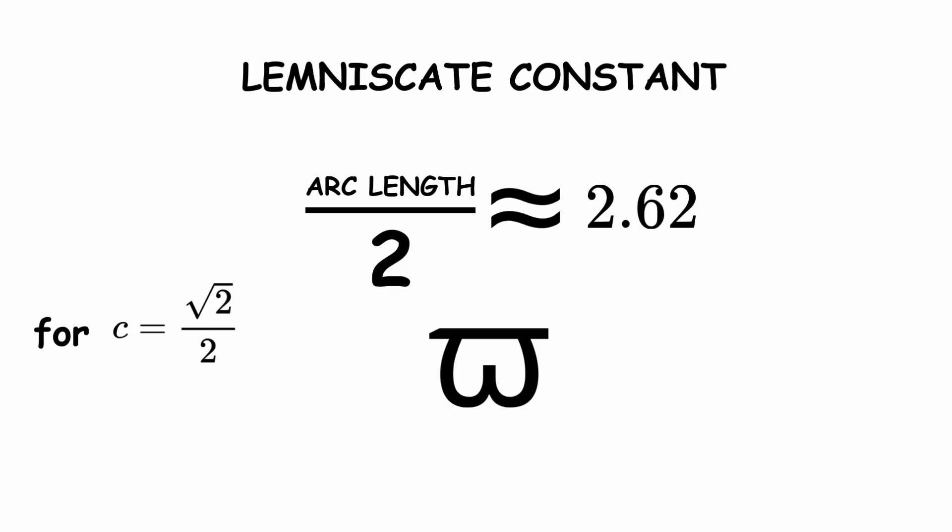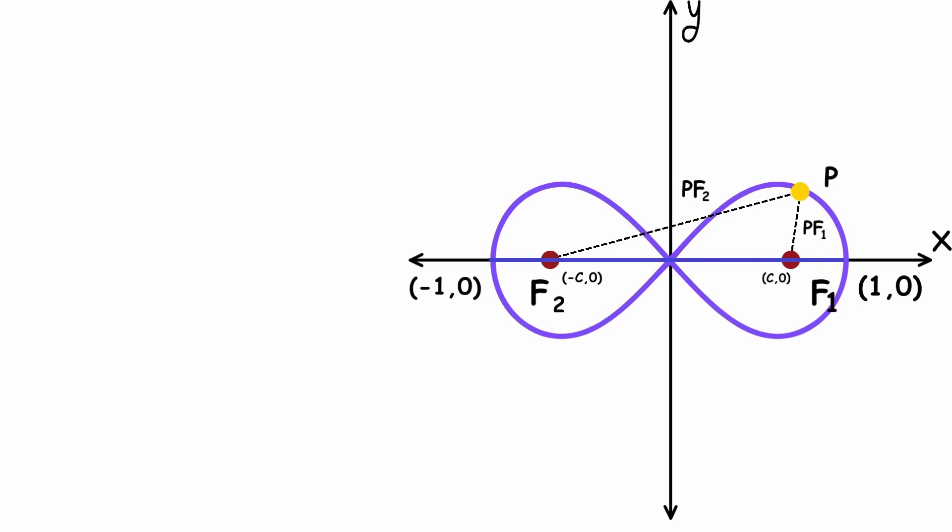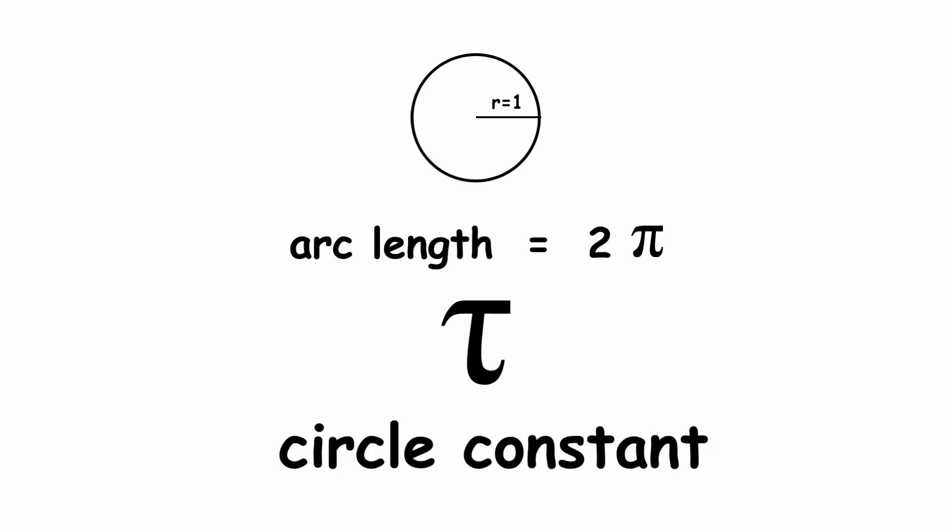However, it is worth noting that some mathematicians say that 2 pi, the arc length of the entire Lemniscate, is the Lemniscate constant instead. For those of you who know that the arc length of the entire unit circle is 2 times regular pi, and that this is sometimes denoted as tau and called the circle constant, this should sound very familiar to you.